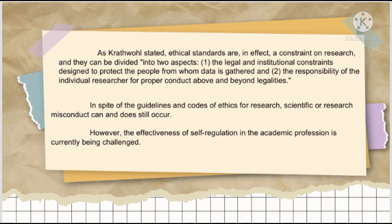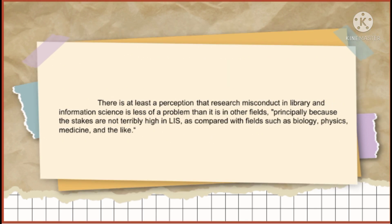On scientific and research misconduct: Raul stated that ethical standards are in fact a constraint on research and can be divided into two aspects — first, the legal and institutional constraints designed to protect the people from whom data is gathered; and second, the responsibility of the individual researcher for proper conduct above and beyond legalities. Despite guidelines and codes of ethics, scientific misconduct can still occur. Research misconduct in LIS is perceived as less of a problem than in fields such as biology, physics, and medicine, principally because the stakes are not as high.